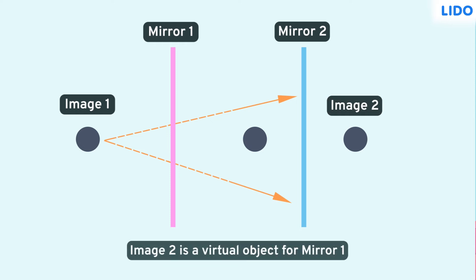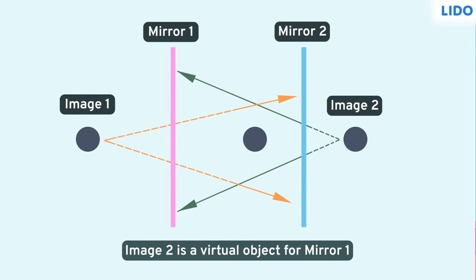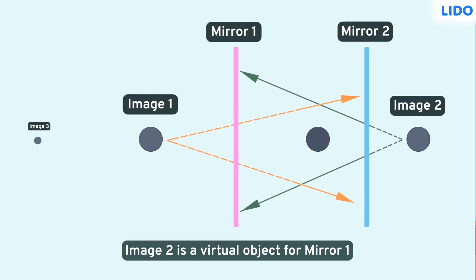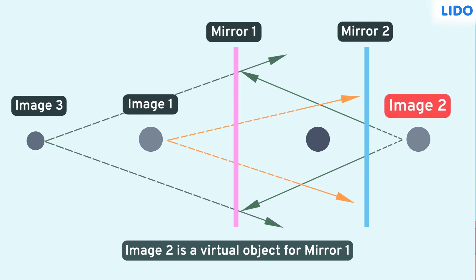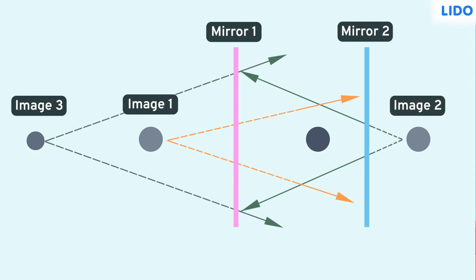The image 2 is now a virtual object for mirror 1. So a new image is formed by mirror 1. This image 3 again acts as a virtual object for mirror 2. The cycle continues and as a result, infinite reflections are obtained.